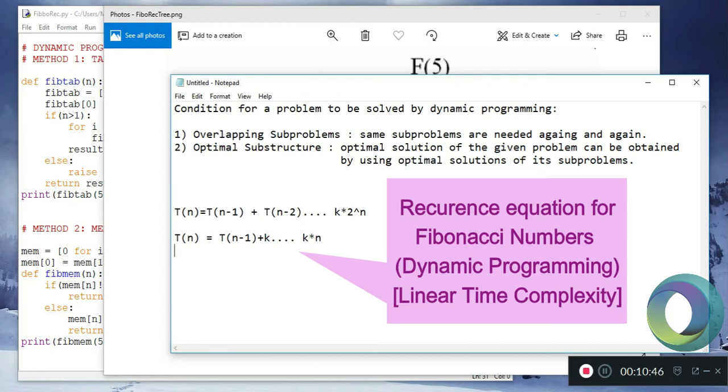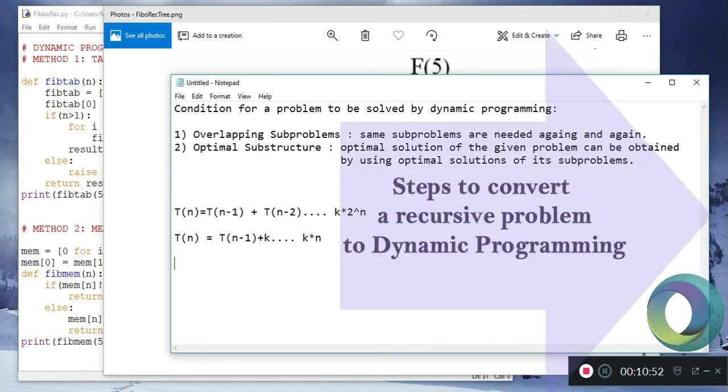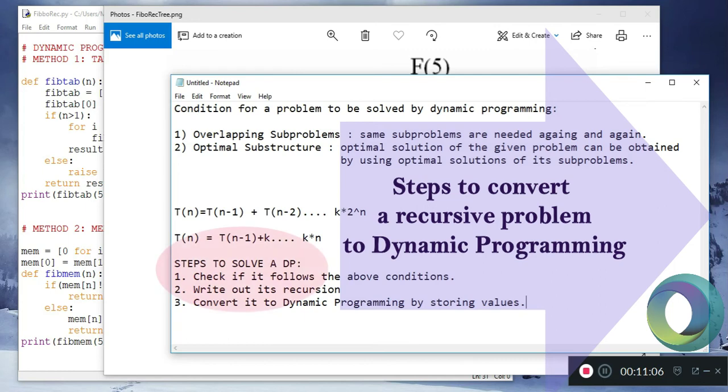Now when you have a recursive problem, how to convert it into dynamic programming? Number one, check if it follows the above conditions: the overlapping subproblem and optimal substructure condition. Second, write out its recursion.